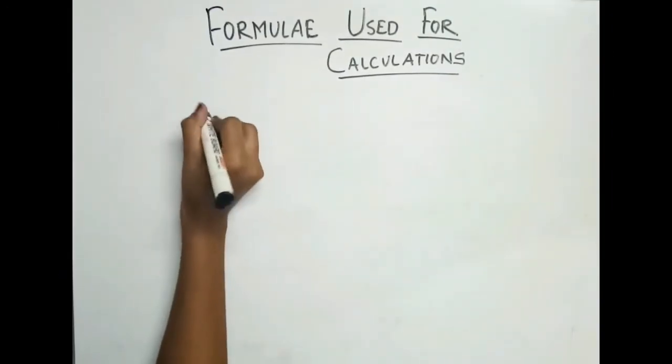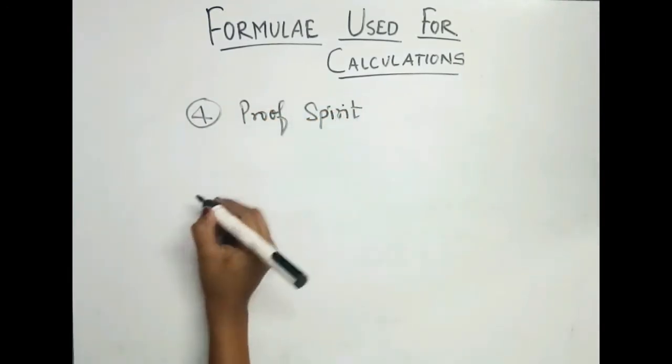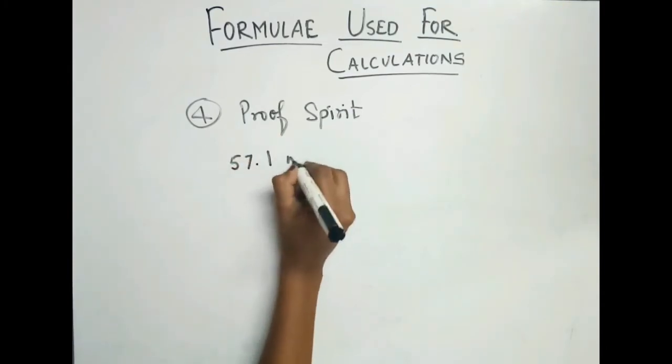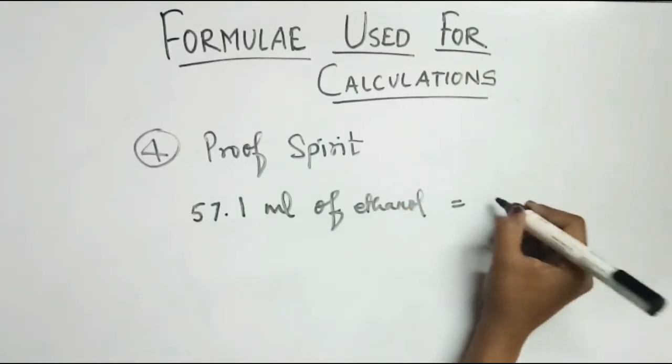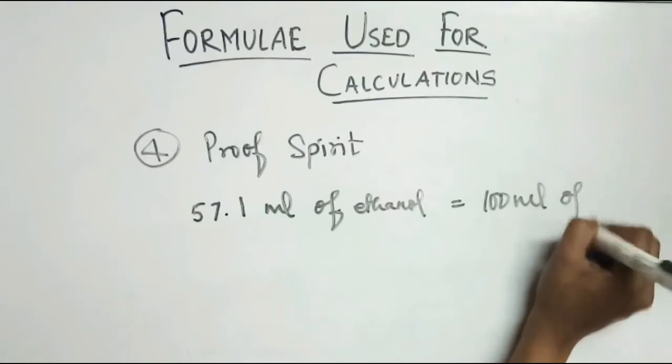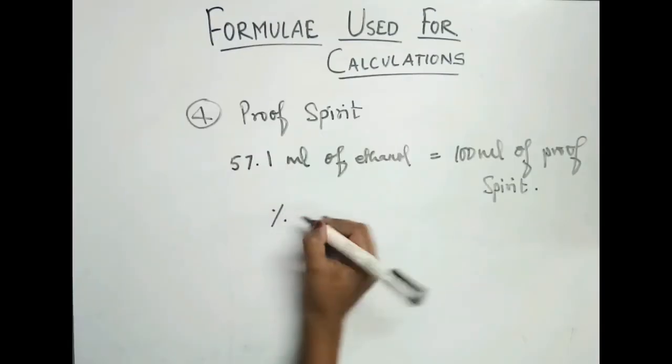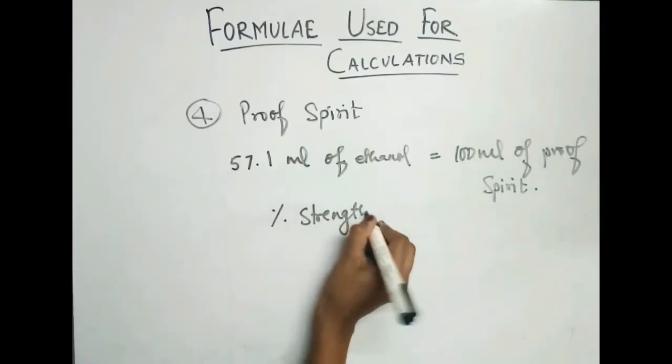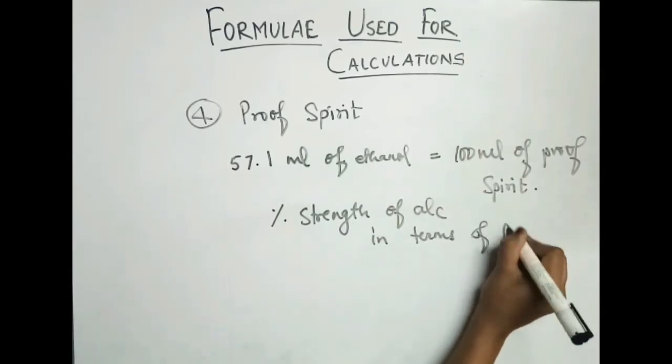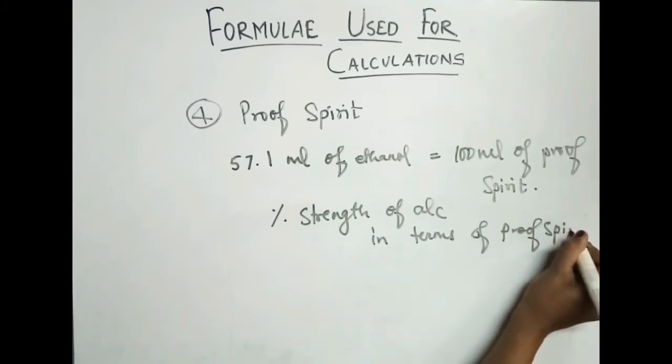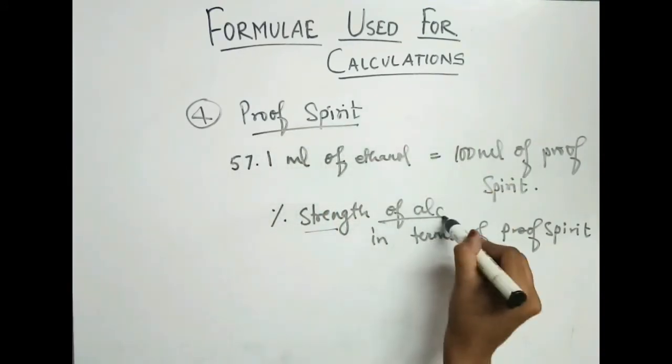The fourth formula is used for calculation of proof spirit. In India, 57.1 ml of ethanol is considered equal to 100 ml of proof spirit. We will see how to calculate proof spirit in terms of percent strength of alcohol.